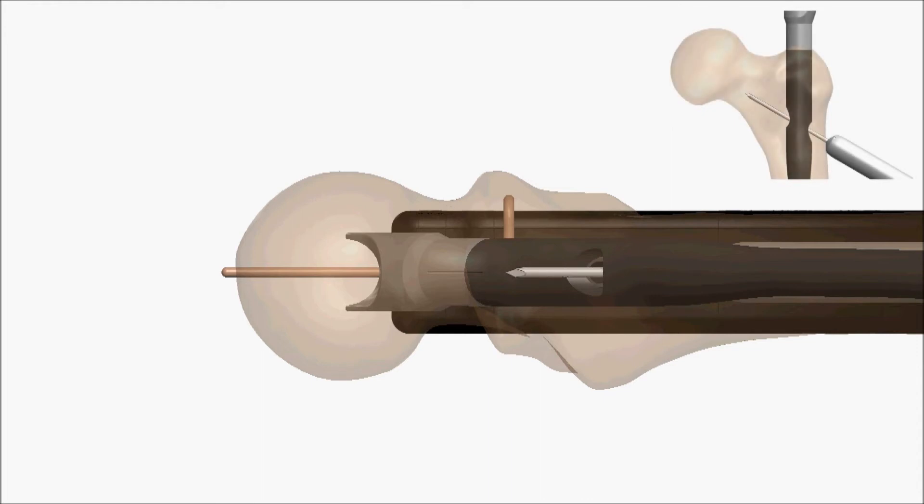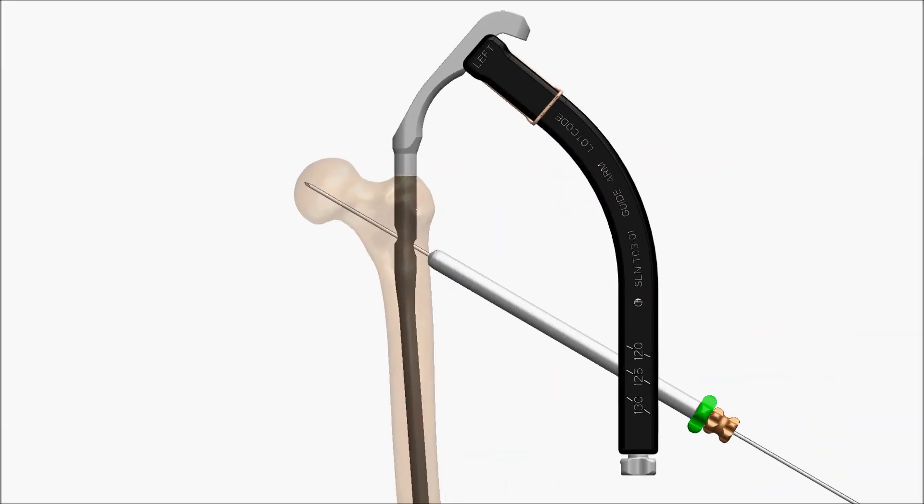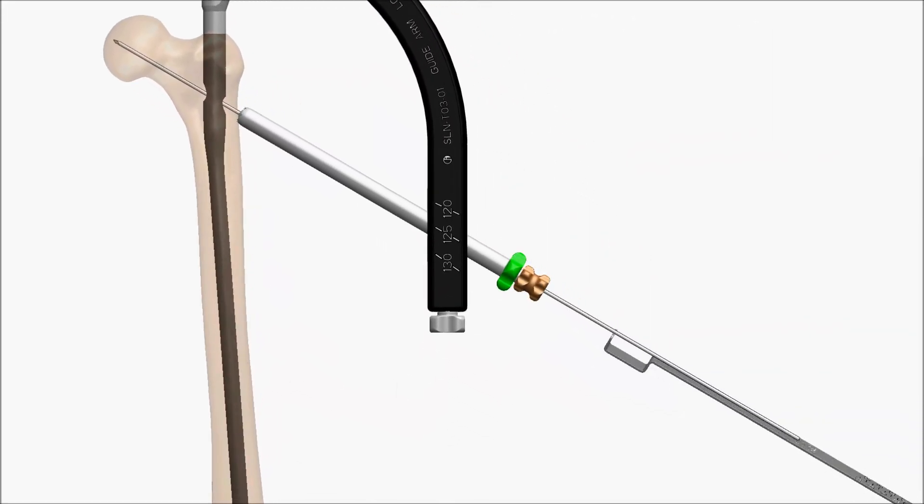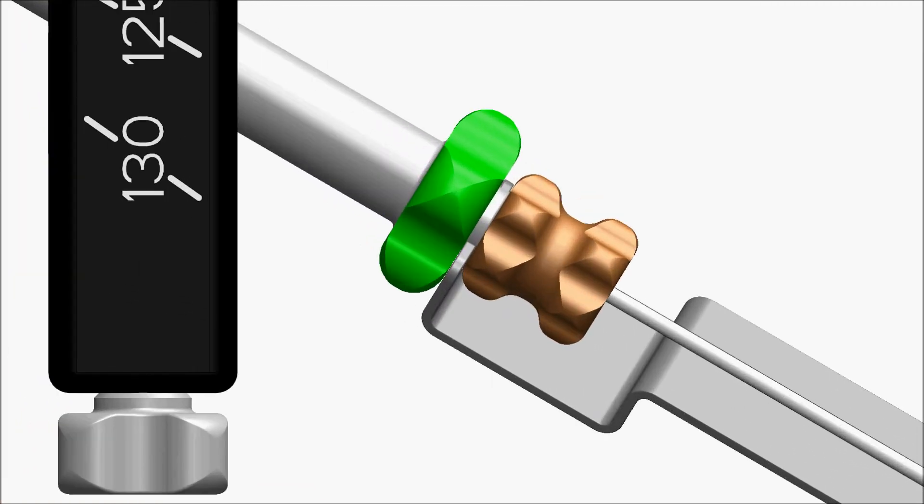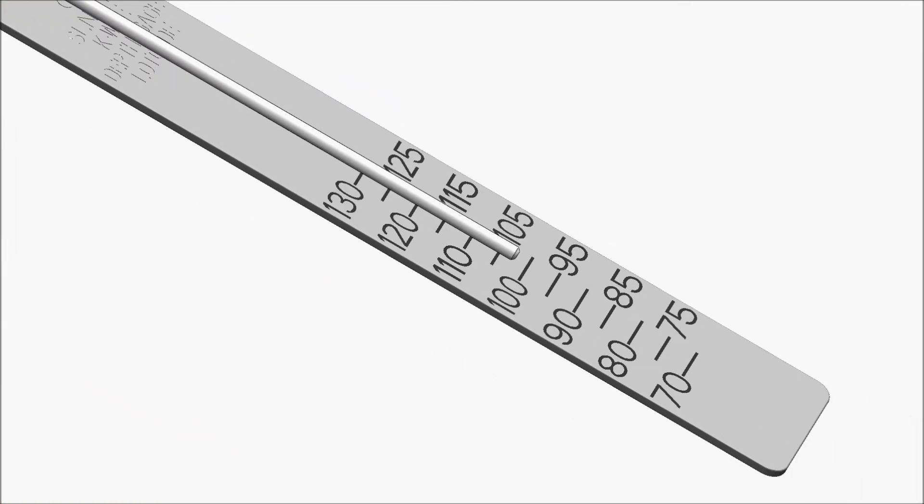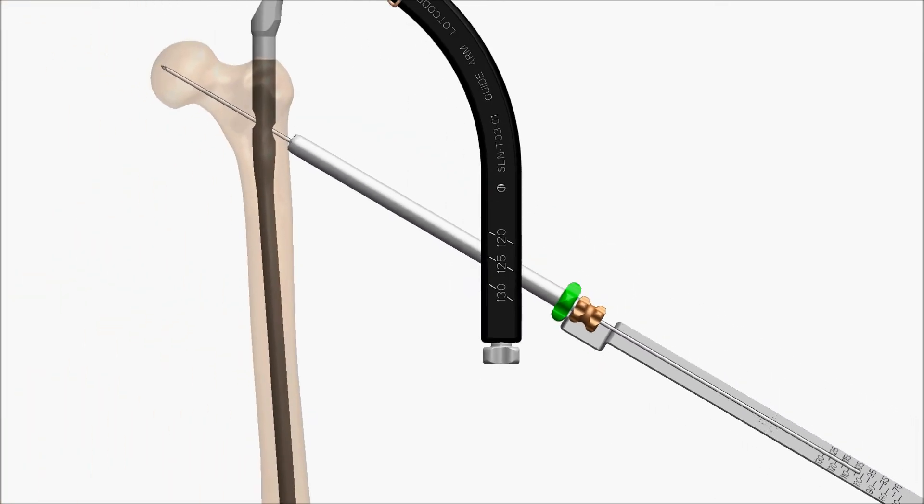Insert the guide pin to the level of the subchondral bone. Determine the drilling depth using the guide pin ruler. The value obtained is a direct measurement to the tip of the guide pin.